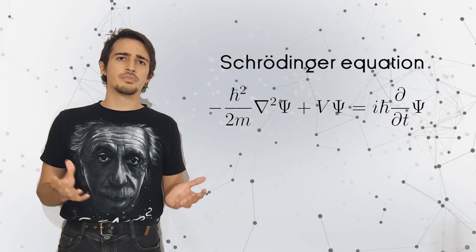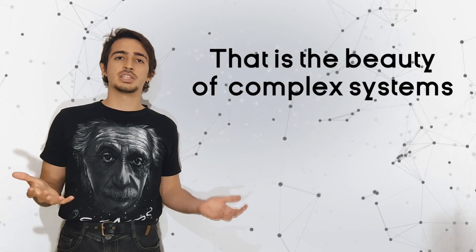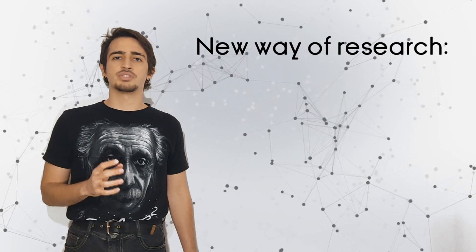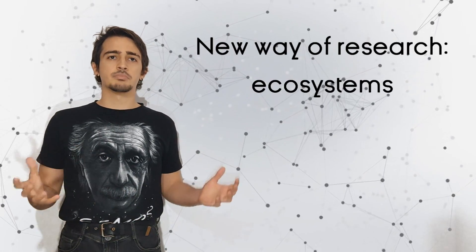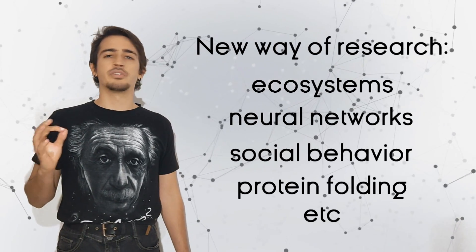You don't need to solve the Schrödinger equation one million times to study metals. That's the beauty of the physics of complex systems and at the same time is the cause of the Ising model's popularity. The basic idea of considering the nearest neighbors and focusing on the interaction of the parts started a new way of research, which encompasses ecosystems, social behavior, neural networks, protein folding, and a very, very, very long, etc.